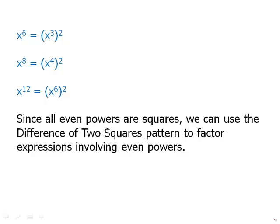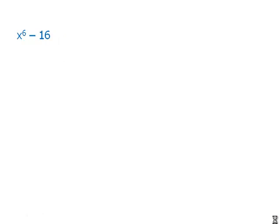Since all even powers are squares, we can use the difference of two squares to factor expressions involving even powers. For x to the 6th minus 16: b is 4 because 4 squared is 16, and x to the 6th is x cubed squared, so a equals x cubed. This factors into x cubed minus 4 times x cubed plus 4.